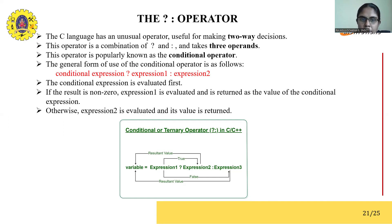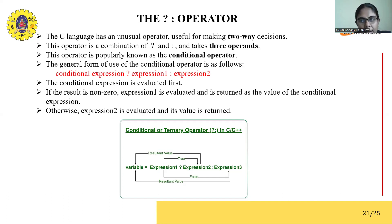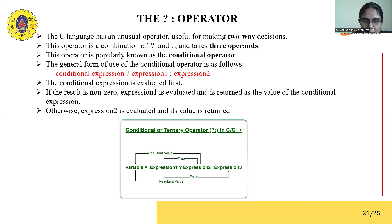The conditional expression is evaluated first. If the result is non-zero, which means the result is true, expression one will be evaluated. On the other hand, if the conditional expression value is zero — if it is false — then expression two will be evaluated. This is what is shown in this picture.